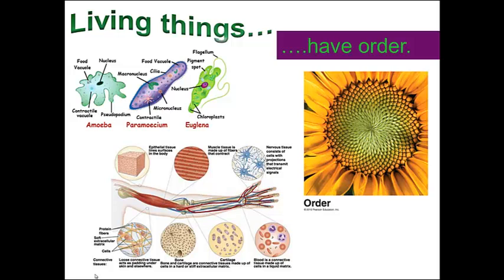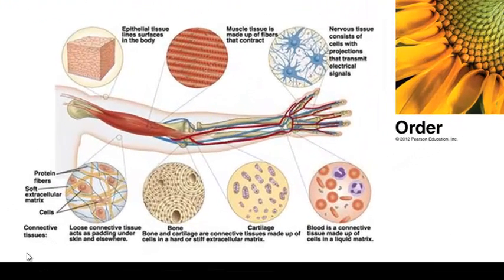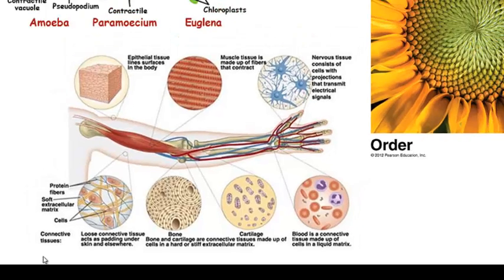Or there are multicellular organisms in which there are many cells, many cell types, and each of them are specialized to function in the organism. So just in this human arm, we can see muscle tissue, bone tissue, cartilage, and nervous tissue. All of those tissues are based upon the structure of the cell.